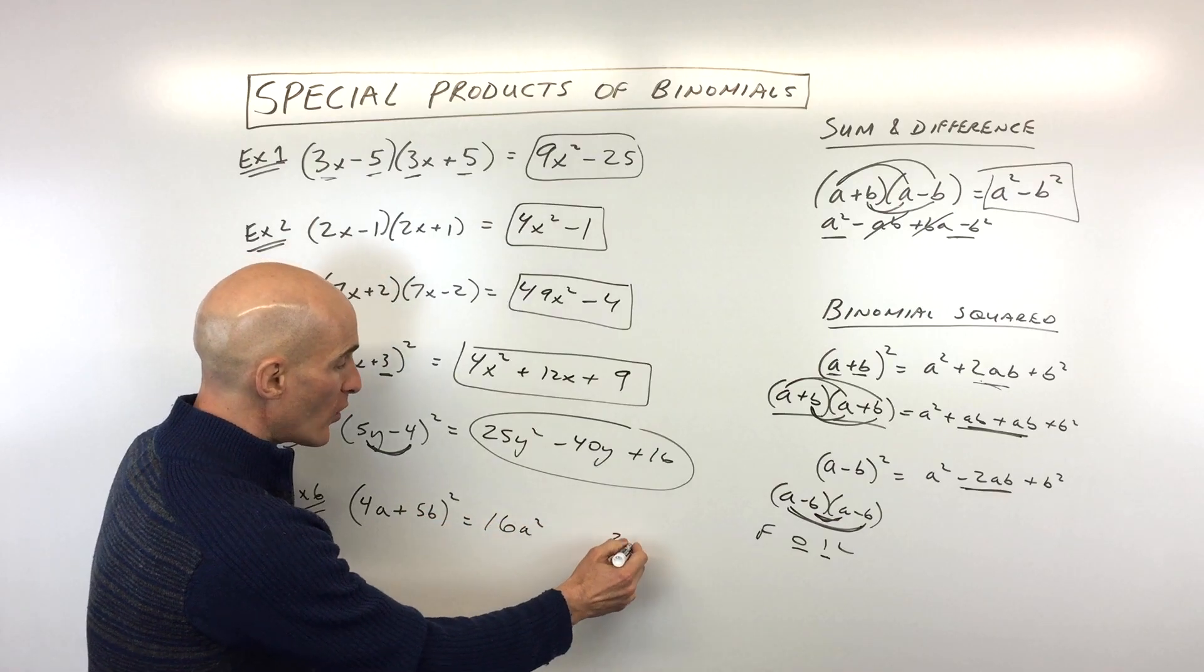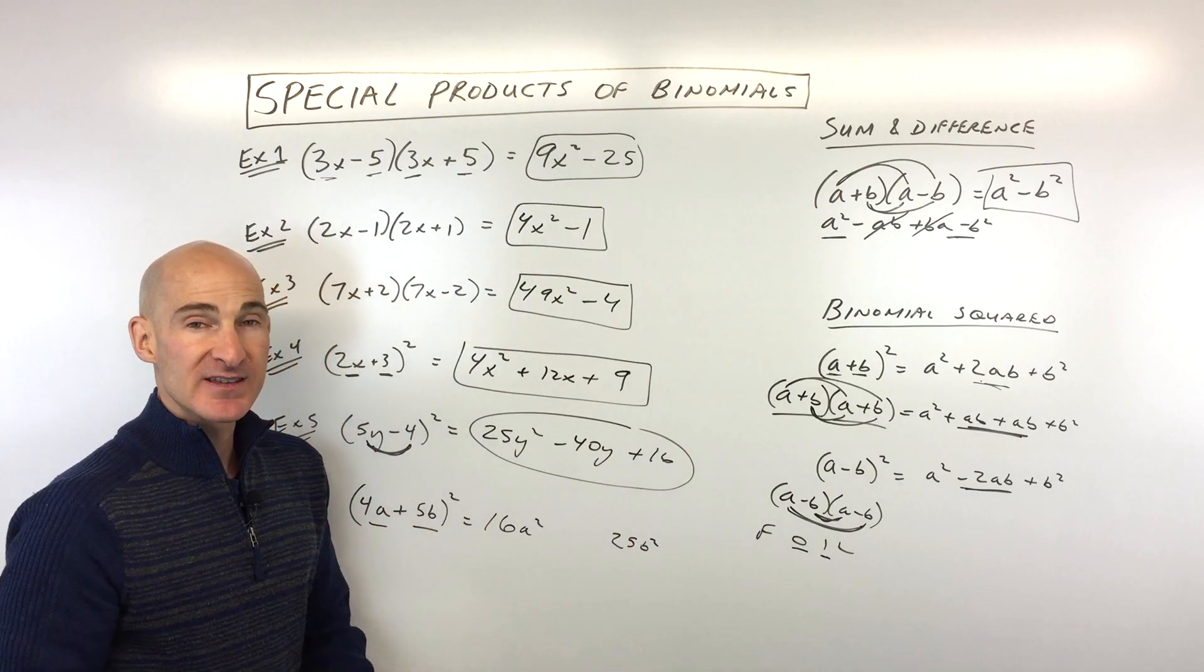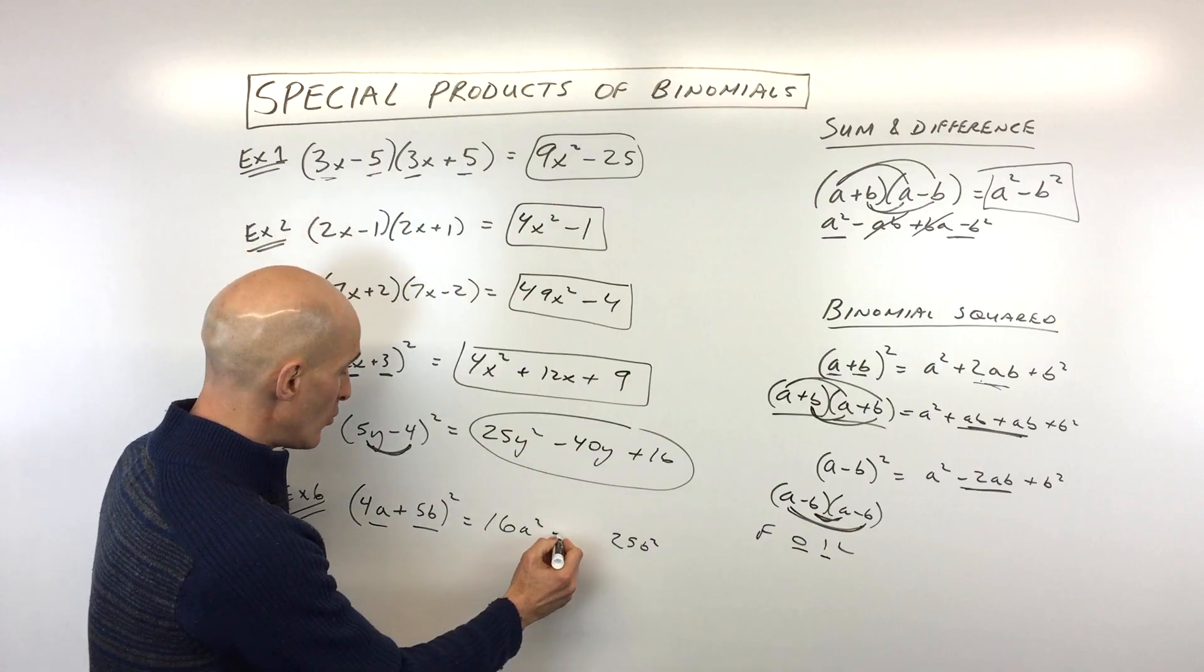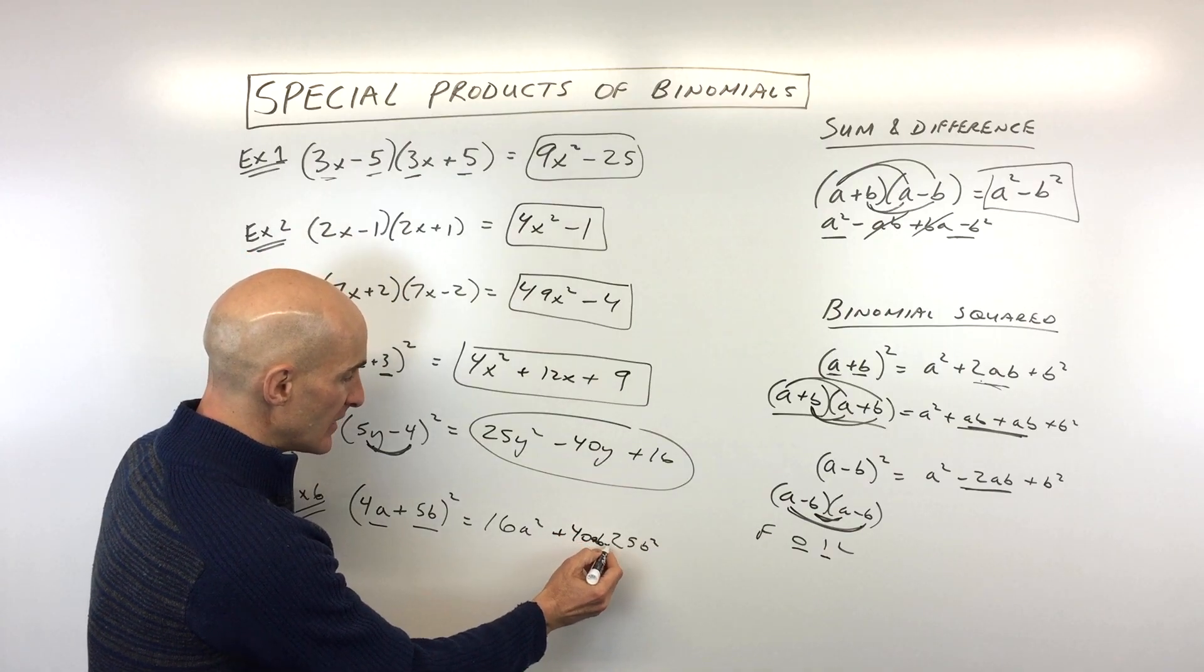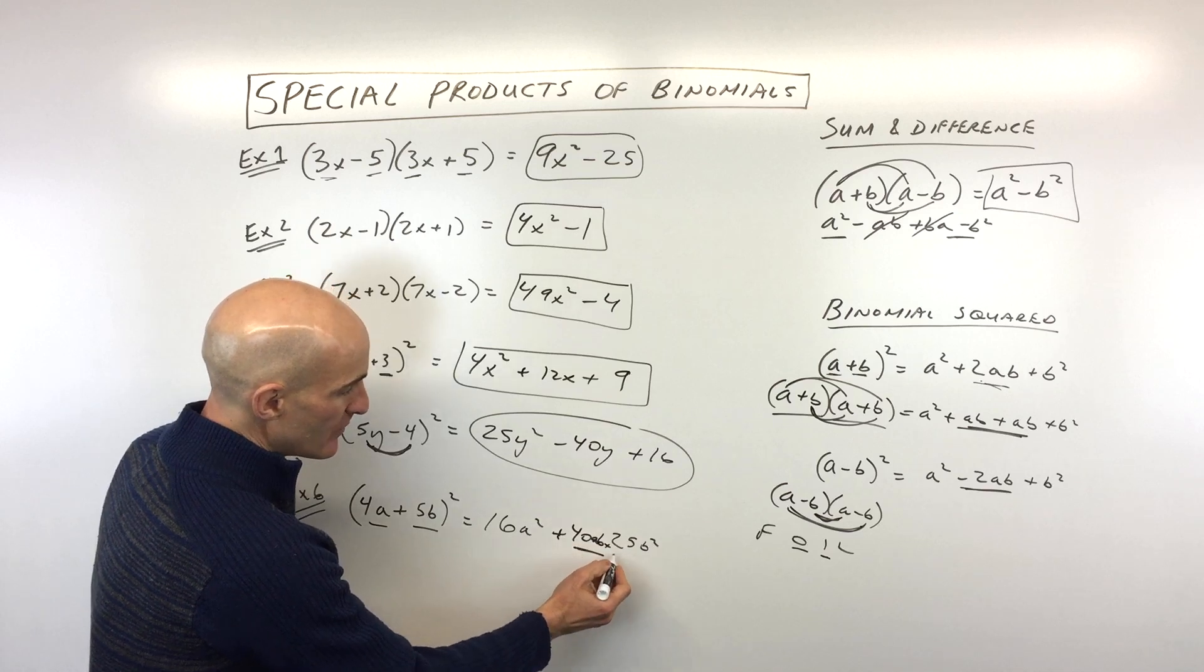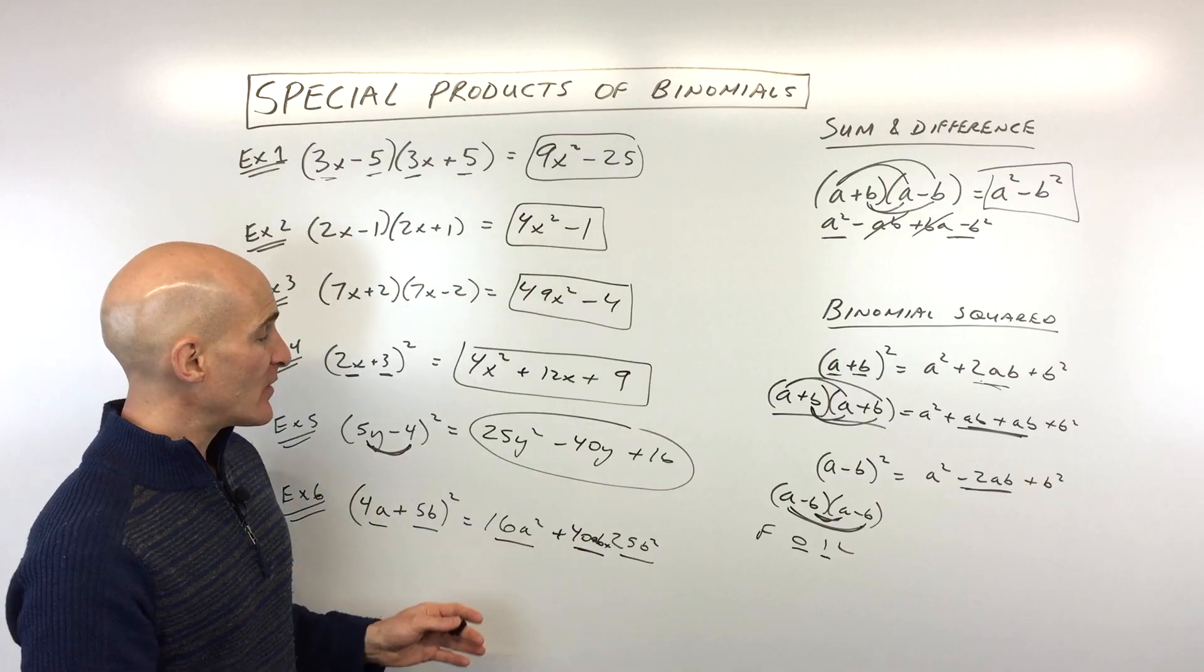4a squared is 16a squared. 5b squared is 25b squared. And then the middle term is 4a times 5b, that's 20ab doubled, that's 40ab. Let me see if I can squeeze that in there. 40ab plus 25b squared and the 16a squared in front.